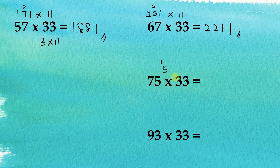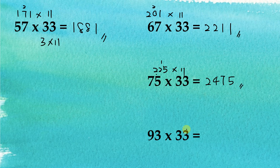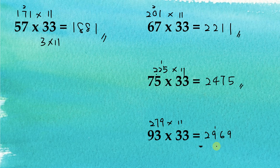For 75 multiplied by 3: 3 times 5 is 15, and 3 times 7 is 21, plus 2 is 22, giving 225. Then 225 multiplied by 11: the first digit is 2, followed by 4, then 7, then the last digit is 5 — wait, giving 2475. For 93 multiplied by 3 equals 279, then 279 multiplied by 11: the first digit is 2, the second is 9, 2 plus 7 gives the third digit as 9 with a carry, and the last digit is 9, giving 3069.